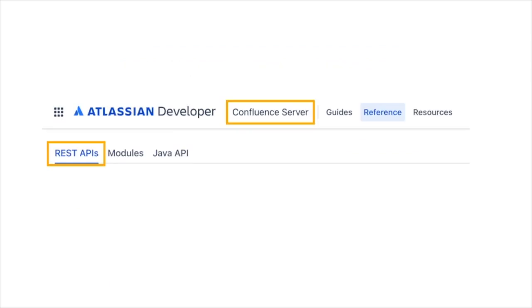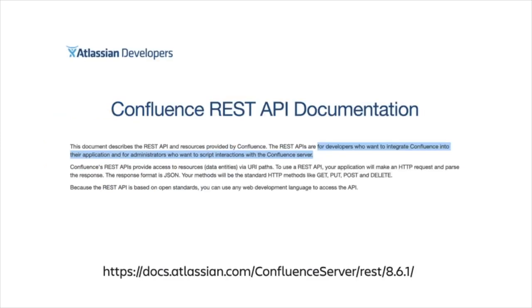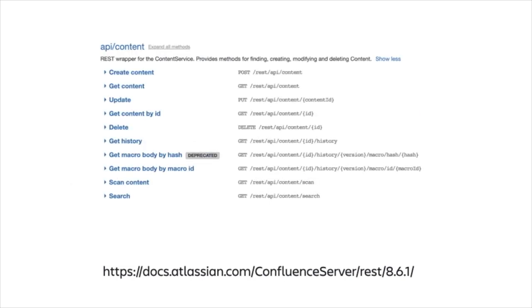That's not to say there was no need for a REST API in the server world. There was in fact a REST API exposed by Confluence server, but it was just generally not used by P2 plugins and was more for an administrator wanting to script something, or for some sort of remotely hosted application which wanted to interact with Confluence. For example, here are our beloved content endpoints on Confluence server.